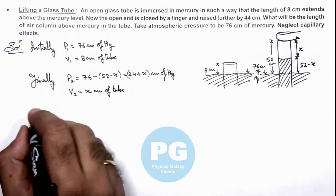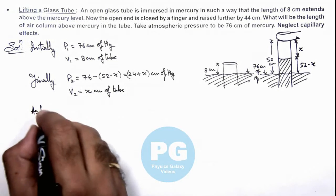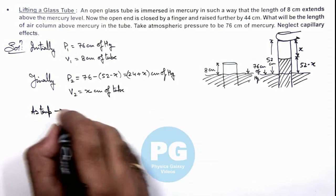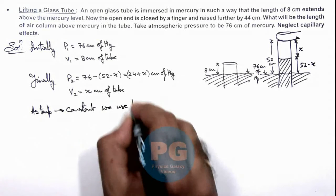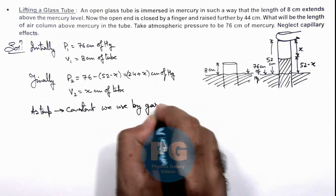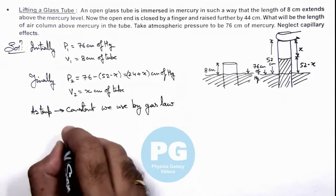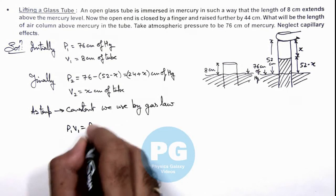Temperature can be taken as constant. We use ideal gas law, P1 V1 equals P2 V2.